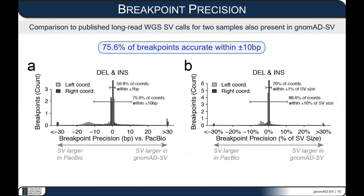Regarding breakpoint accuracy: using long-read PacBio sequencing, we asked how close our short-read coordinate predictions come to the breakpoint coordinate reported by long-read assemblies. We are accurate within plus or minus 10 base pairs for the majority of variants, and over half are accurate within a single base pair. In general, breakpoint precision is pretty good in gnomAD, although maybe a quarter of all variants are off by more than 10 base pairs.